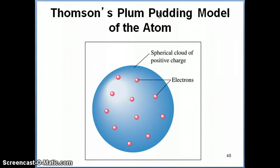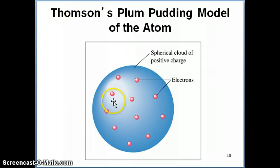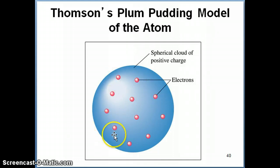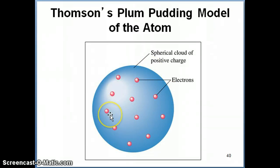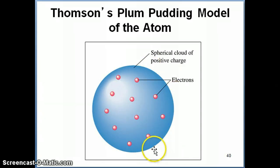That's called the plum pudding model of the atom. Plum pudding is a holiday dessert of sorts often served in England, which is where Thomson was from. He called this the plum pudding model because he envisioned the atom as composed of electrons, which are negatively charged particles distributed all over this sphere. People already knew that a negative charge on its own would not be stable, so it has to be neutralized by an equal amount of positive charge. What he proposed was that the positive charge part of the atom is a cloud that surrounds the electrons.